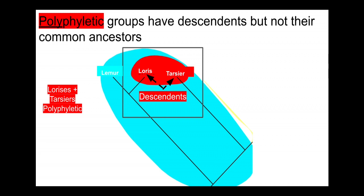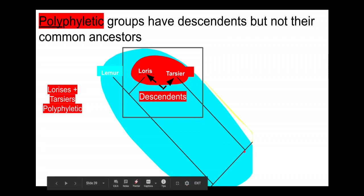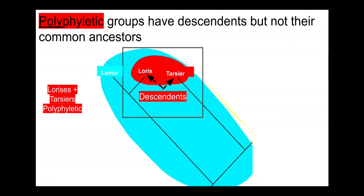Polyphyletic groups can be a little complicated to wrap your head around. It's more important to just know that they're non-monophyletic. They are groups where certain descendants are included but not their common ancestors. In this case we've circled just lorises and tarsiers, but their ancestors are excluded — the ancestor would be relatively lemur-like, and different from either of them. The biggest thing is that they are defined by a certain trait: large eyes.